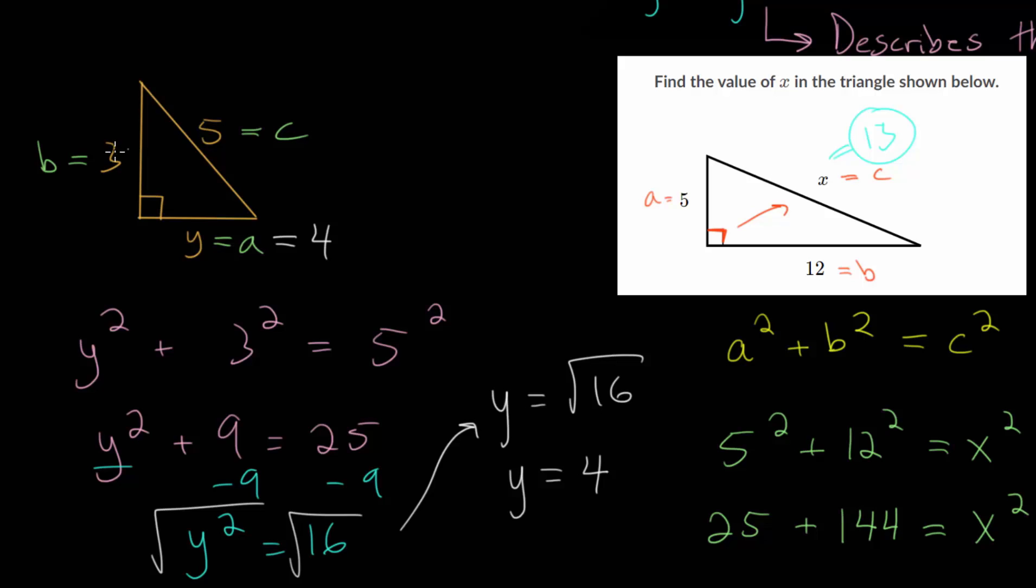And notice how in both scenarios, we ended up with all whole numbers for the sides of our right triangles. And we have a specific name for when that happens. These are called Pythagorean triples. So anytime you get only integers or only whole numbers for the side lengths in your right triangle, then that's what's known as a Pythagorean triple.